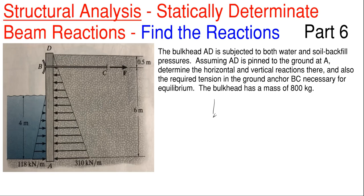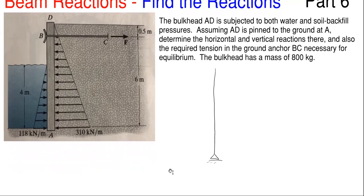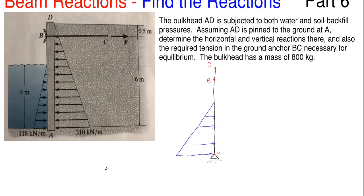Let's draw a quick free body diagram because this is a more complex picture. This will be my bulkhead, with my pin down here at A, point B up here, and point D at the top. We have our water pressure, already calculated. If it weren't given, we'd use the weight of water times the distances. We have a force of 118 kilonewtons per meter for water pressure, and the bulkhead is four meters tall.